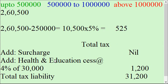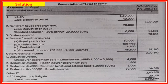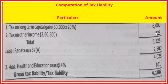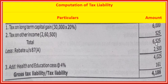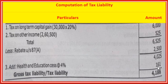Surcharge is not applicable. Health and education cess at 4 percent applies. Total tax: long term capital gain tax 6,000 plus other income tax 525 equals 6,525. Now, total income is 2,90,500 which is less than 3,50,000, so rebate under section 87A applies. 100 percent of tax or 2,500, whichever is less. Rebate applied, then education cess at 4 percent. Total tax liability: 4,025 at 4 percent equals 692 rupees. Total tax liability: 4,186 rupees.